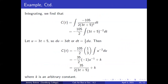Integrating, we find c of t equals the integral of negative 105 over 2 times 3t plus 5 to the negative 2 dt. With u equals 3t plus 5, du equals 3 dt, or dt equals one-third du. Then c of t equals negative 105 over 2 times one-third times the integral of u to the negative 2 du, which is negative 35 over 2 times negative 1 times u to the negative 1 plus k, which is 35 over 2 times 3t plus 5 to the negative 1 plus k, where k is an arbitrary constant.